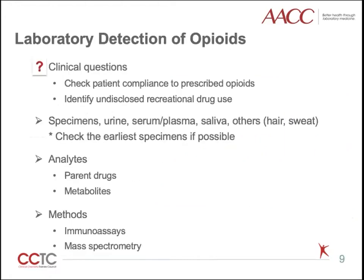Clinical labs play essential roles in pain management and the opiate crisis. Two main questions of interest include checking patient compliance to prescribed opiates and identifying undisclosed recreational drug use. To answer these questions — i.e., to detect opiates — we need to consider specimen type, analyte, and methods, which we will look into in the following slides.